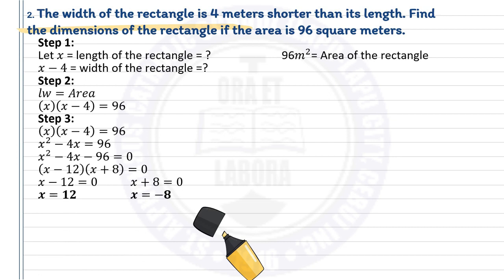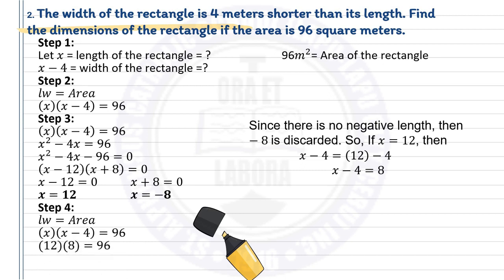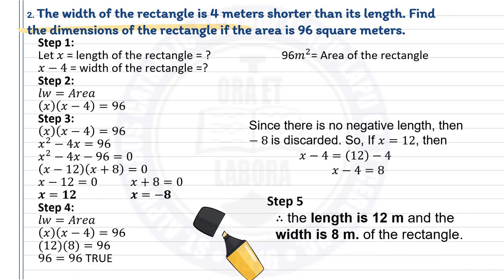Simplifying, x equals 12 or x equals negative 8. Since there is no negative length, negative 8 is discarded. So if x equals 12, then x minus 4 equals 12 minus 4, giving a width of 8. Step 4: Do the checking. Length times width equals area: 12 times 8 equals 96, and 96 equals 96 — that is true. Conclusion: Therefore, the length is 12 meters and the width is 8 meters. Make sure to write the units.